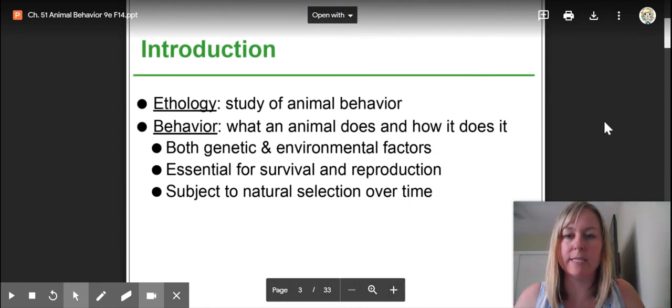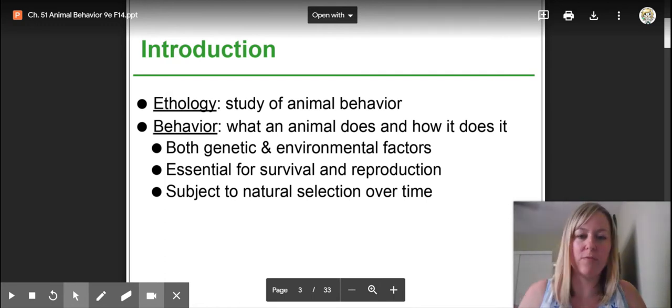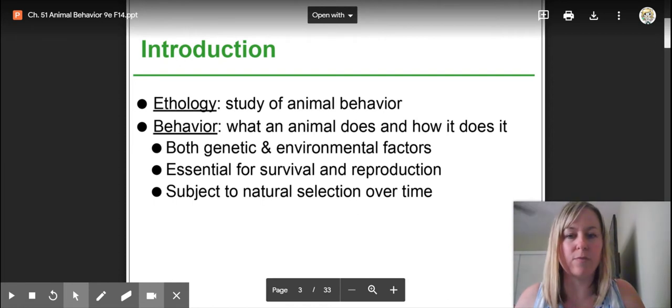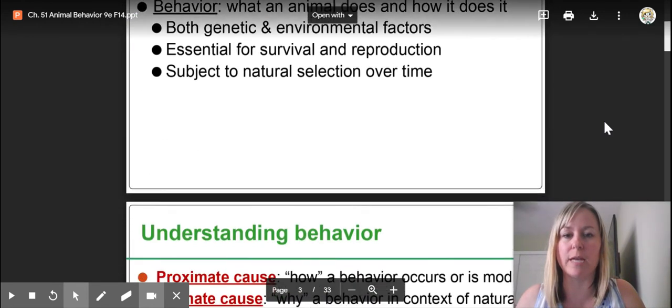First is just a couple vocab words. Ethology is the study of animal behavior. And then, of course, behavior - we're talking about what an animal does and then how it's achieving that or how it does it. There's going to be genetic factors at work, and we'll get a few examples of those, and environmental factors as well. They are essential for survival and reproduction. These behaviors have increased the organism's chance of survival, so it teaches those behaviors to its young or even has some innate genetic behaviors that it can pass on in order to increase survival for reproduction. And they are subject to natural selection over time.